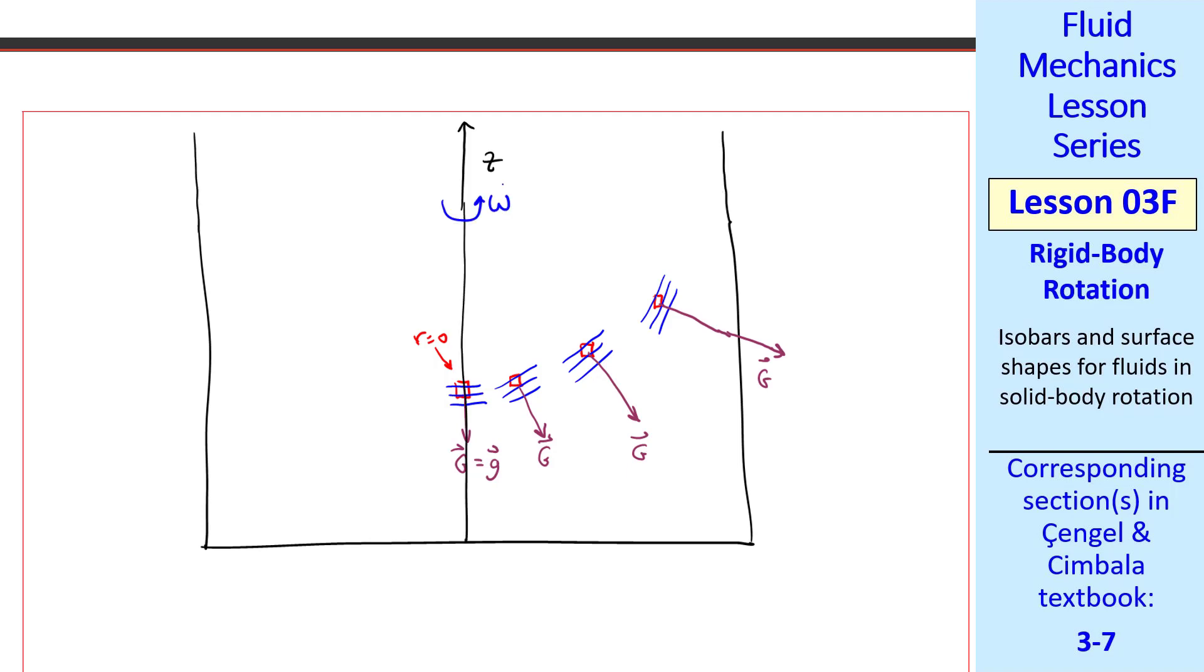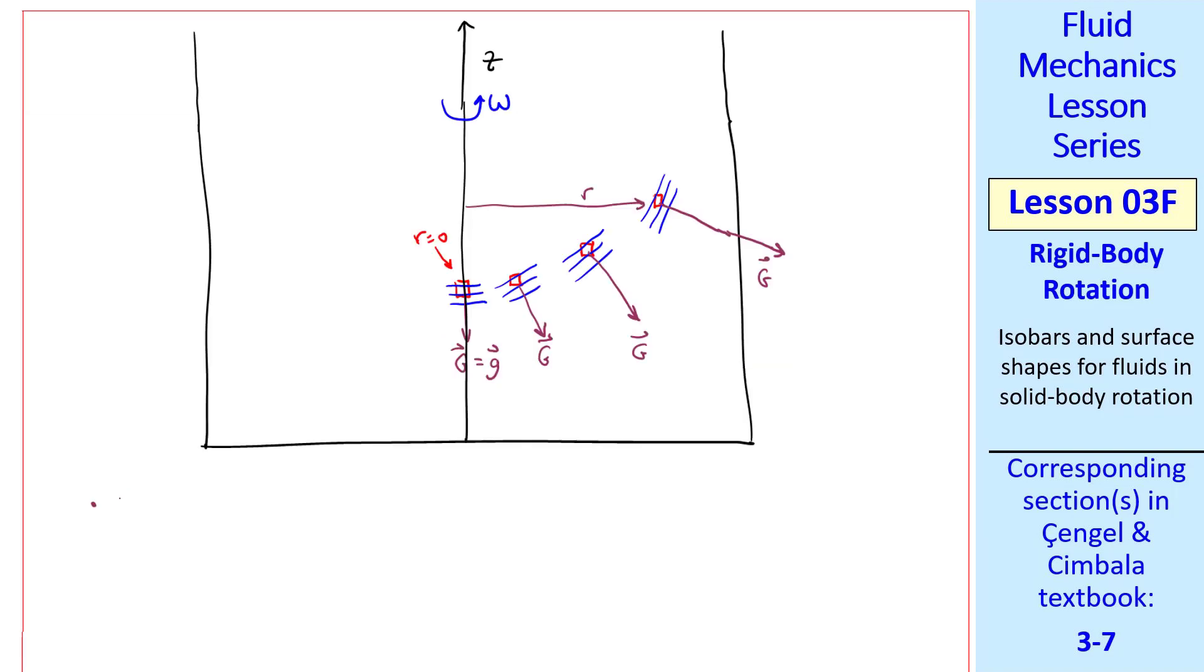Remember, we're rotating around the z-axis, and we're examining various values of r. Qualitatively, the bigger is radius r, the bigger is acceleration A, the centripetal acceleration towards the middle. Therefore, as r increases, the magnitude of g increases, and vector g tilts more to the right, where we're considering the right side of this rotating container.